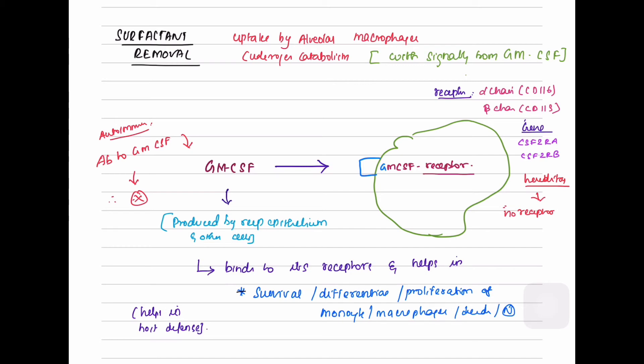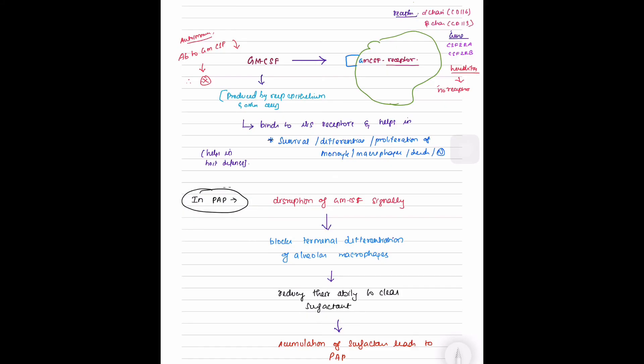In pulmonary alveolar proteinosis, there are two types: one is autoimmune and hereditary. In autoimmune, there will be development of antibodies to the GM-CSF. In hereditary, there will be no receptors because of genetic mutation in the CSF2RA and CSF2RB.